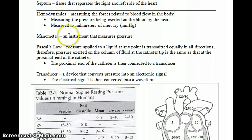First of all, the instrument that measures blood pressure is called a manometer. And then you have to understand Pascal's law, which basically means that pressure applied to a liquid at any point is transmitted equally in all directions. So that means pressure exerted on the column of fluid at the catheter tip, at the distal end of the tip, is the same as that at the proximal end of the catheter. So what that means is when pressure is pushing on the tip of the catheter, that can be read at the proximal end of the catheter.